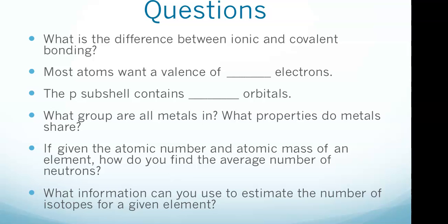The question asks: the p subshell contains how many orbitals? The answer is that the p subshell contains three orbitals and can therefore hold six electrons, remembering that that's two electrons per orbital.